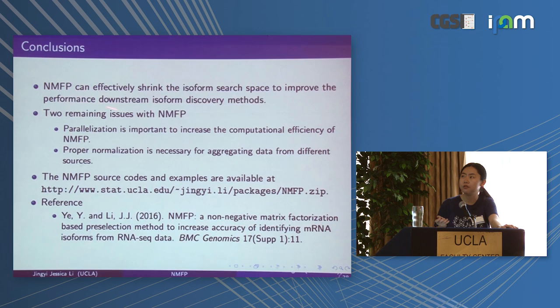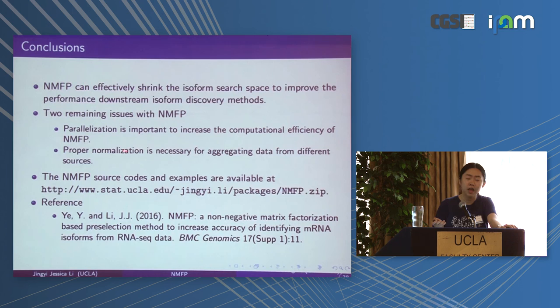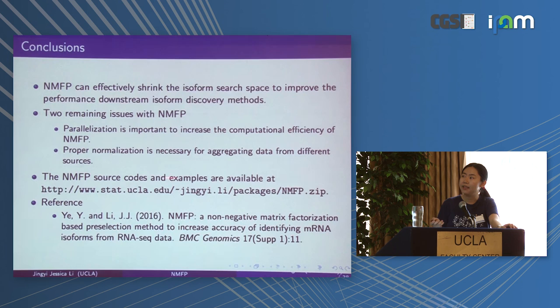In conclusion, NMFP can effectively shrink the isoform search space to improve the performance of downstream isoform discovery methods. Two remaining issues are: first, parallelization is important to increase computational efficiency since we run multiple NMF runs; and second, proper normalization for the input matrix is necessary when aggregating data from different sources. Source code and examples are available on our webpage, and we welcome comments. This is the reference to our paper.